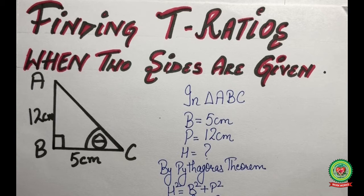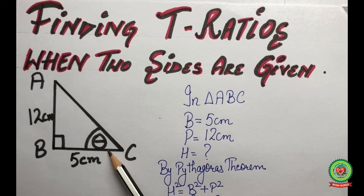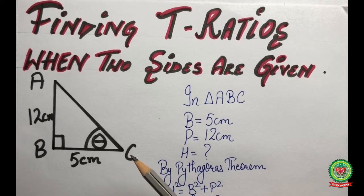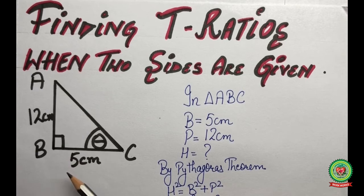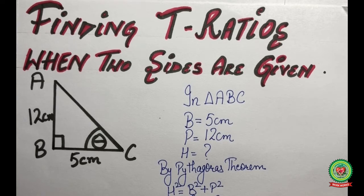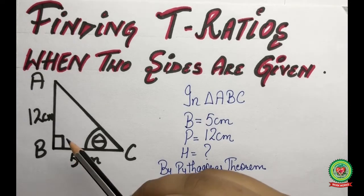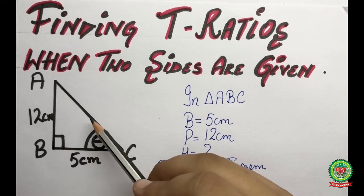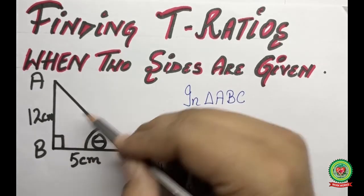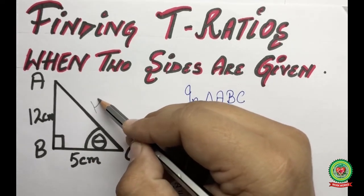For example, in triangle ABC which is a right angled triangle at B, the reference angle theta is given at vertex C. We are given that the length of AB is 12 centimeters and the length of BC is 5 centimeters. Our first step will be to identify the base, perpendicular, and hypotenuse. The hypotenuse is the side opposite to 90 degrees.